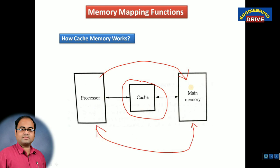The processor needs to access data from main memory, and main memory returns data to the processor — this process takes place continuously. The processor speed is tremendous; it is very fast compared to main memory. So we place one small memory between the processor and the main memory — that is our cache memory. Who has the highest speed? The processor is the fastest, then cache memory is second fastest, and main memory is the third.